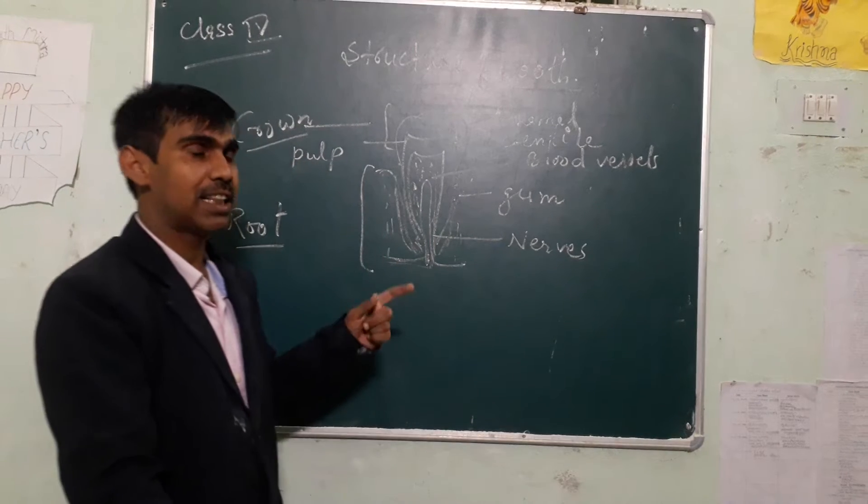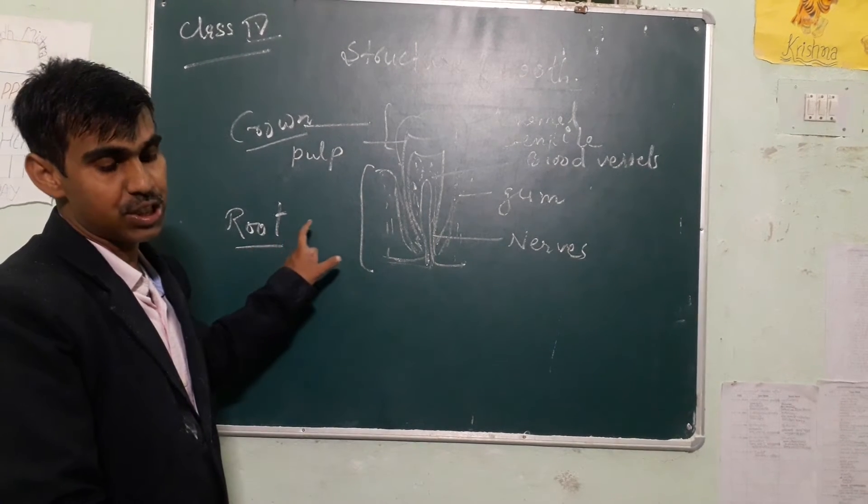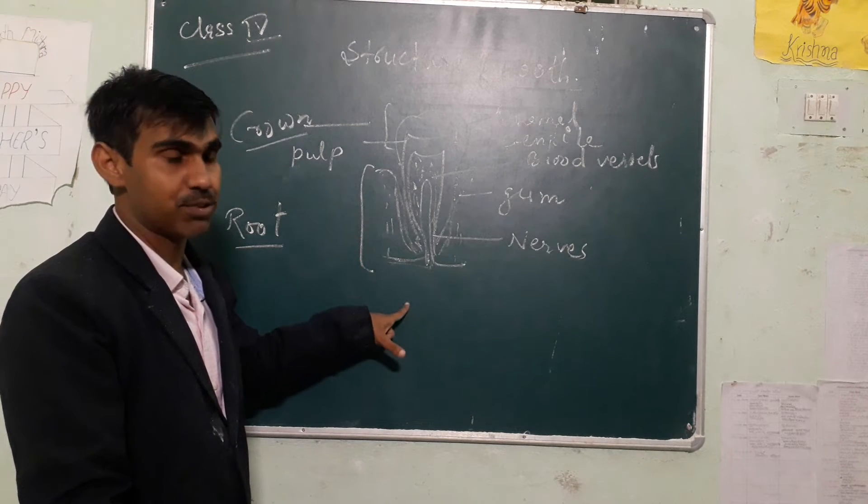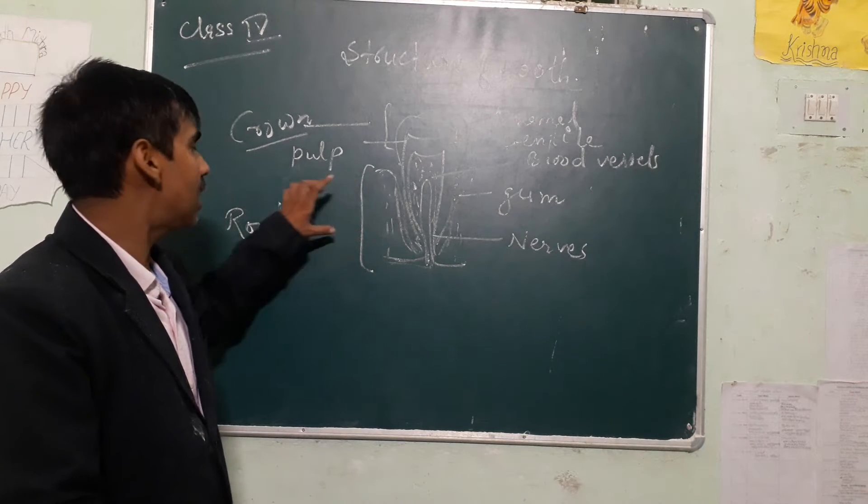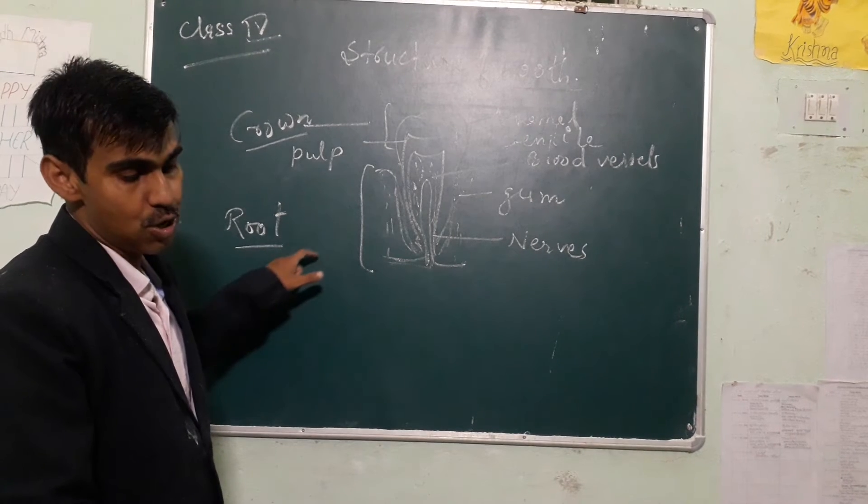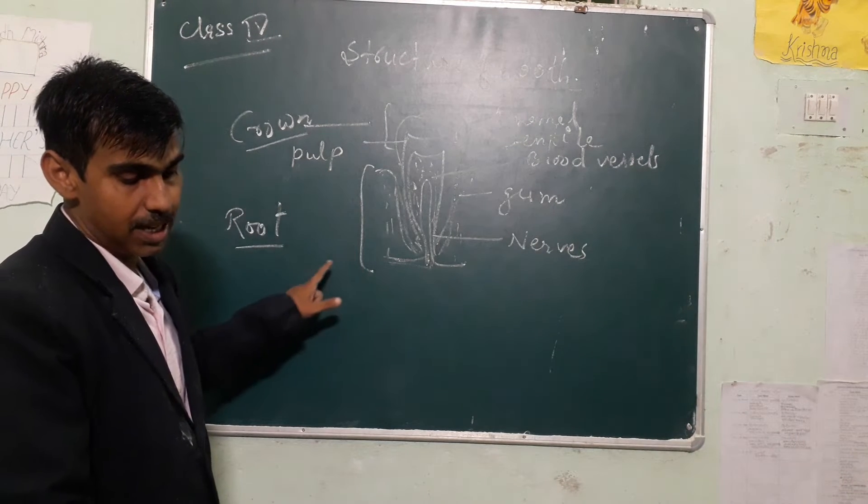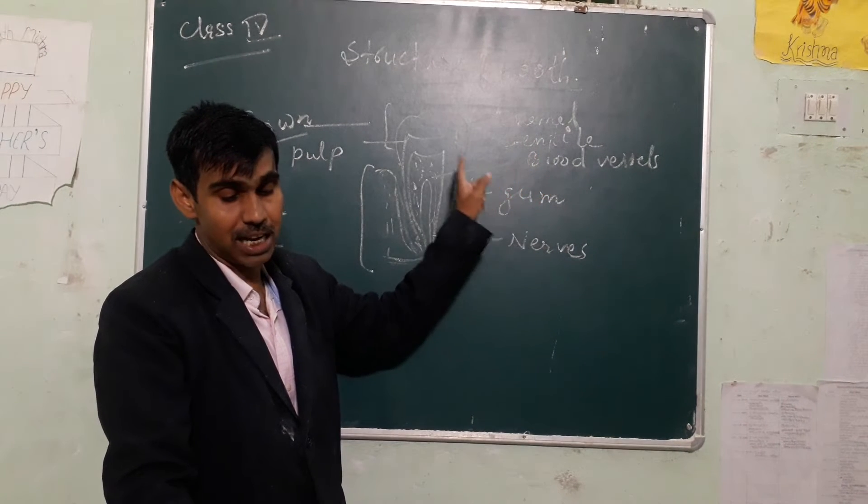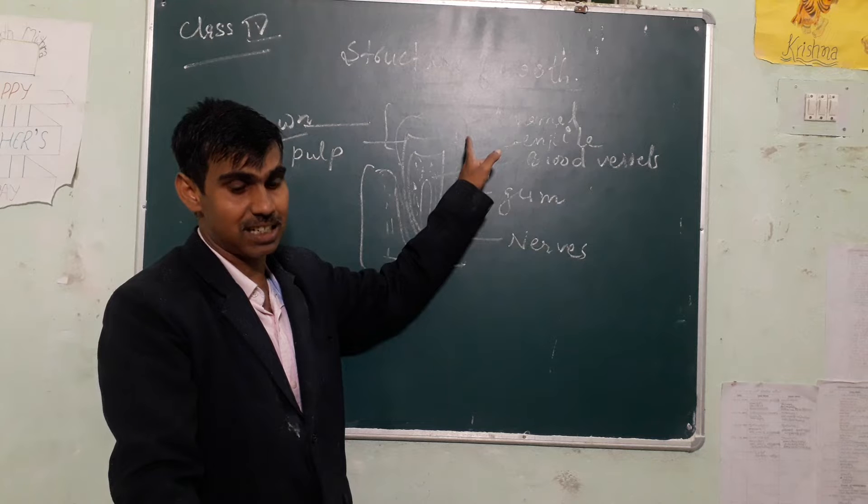Now the part which we can't see, that means it is inside the gums. The root is inside the gums. The crown is covered with a hard, white layer structure.